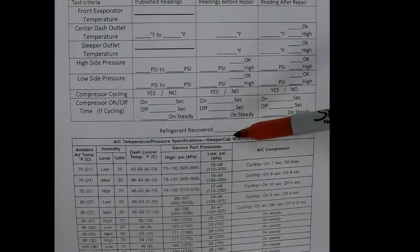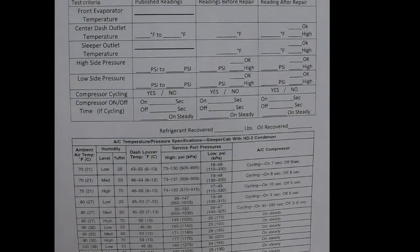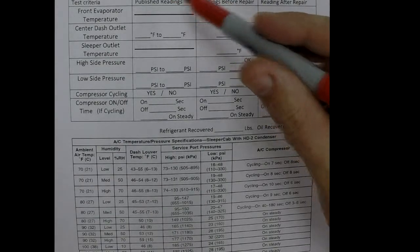If you do find a problem and fix it, then you fill out the third column, readings after the repair. Because we don't want to turn a truck free if it does not pass. If it never passes, there's still something wrong, right? So in order to figure out what the readings are supposed to be, we go to published readings and we go down here.